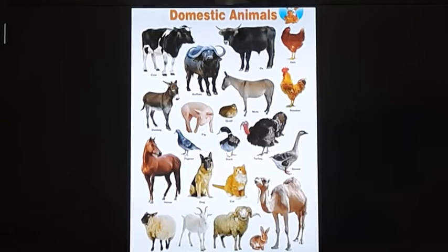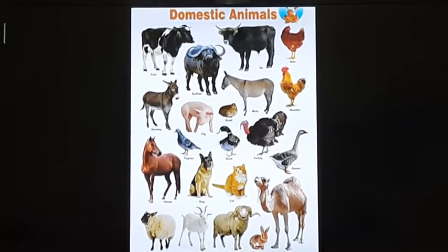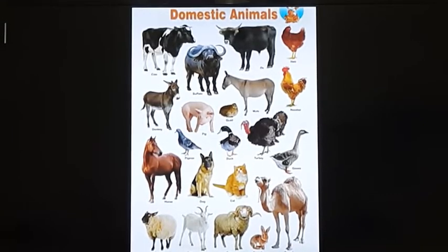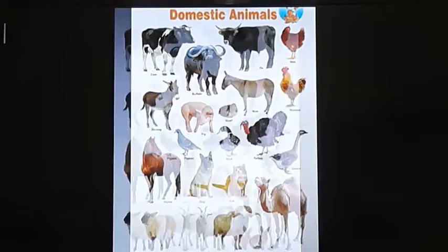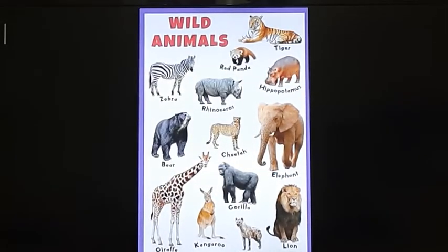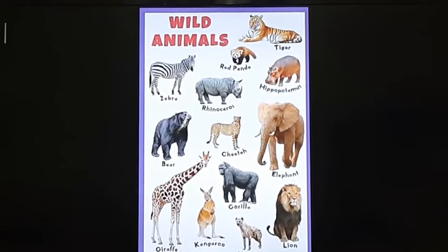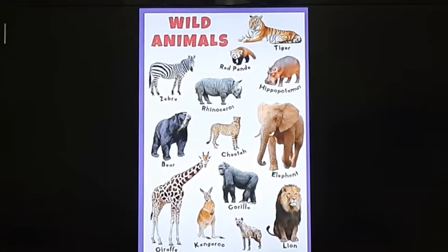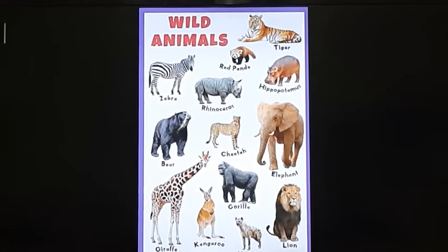Examples of domestic animals include cow, hen, goat, sheep, camel, etc. Now we will discuss the movement in wild animals. Animals that live in forests and are very dangerous to us, due to which we cannot keep them as pets, are called wild animals.